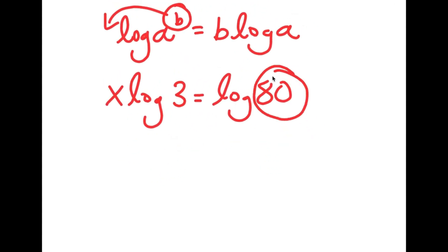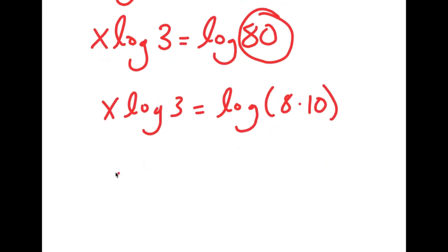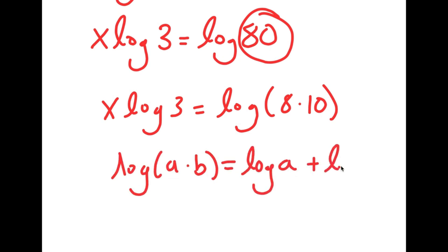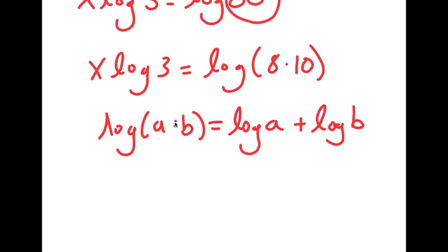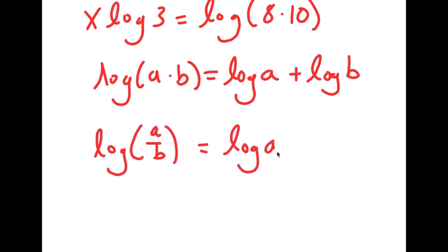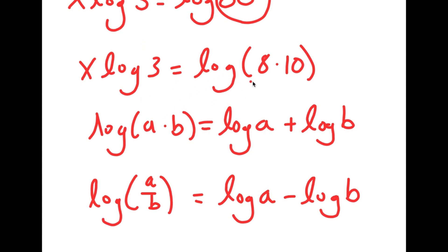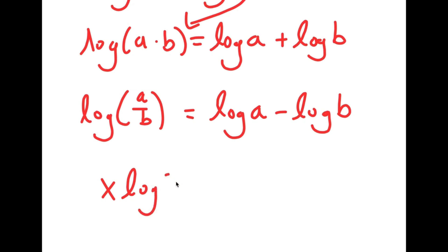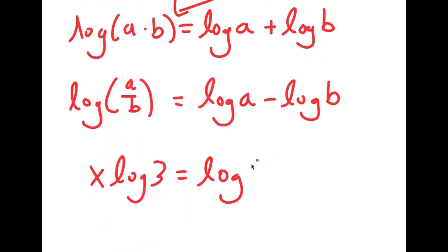Now from here, I'm going to rewrite 80 as 8 times 10. And if I have something in the form log a times b, this is equal to log a plus log b. This is another one of the logarithmic properties. There is also log a over b, and if I have something in this form, this is the same thing as log a minus log b. So going back to the problem, we have log of 8 times 10, and we can think of 8 as a and 10 as b. So this gives us x log 3 is equal to log 8 plus log 10.